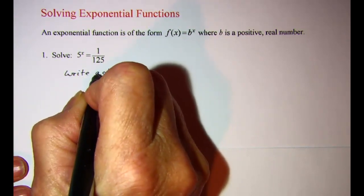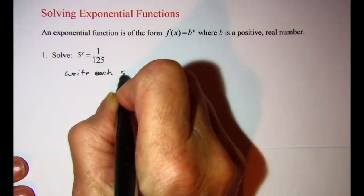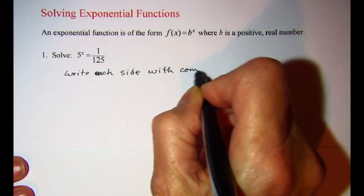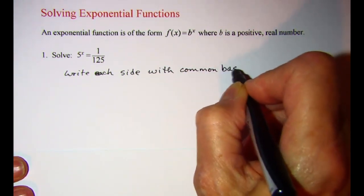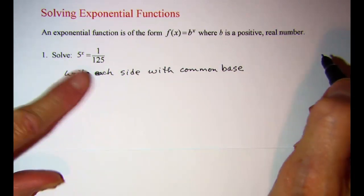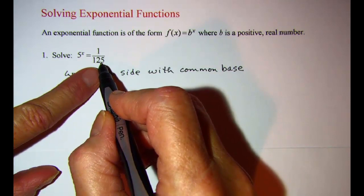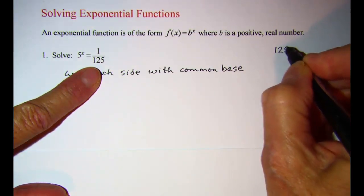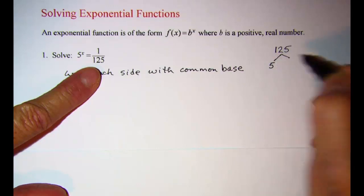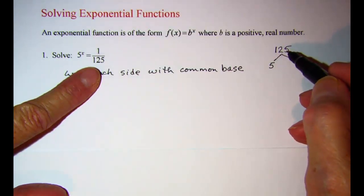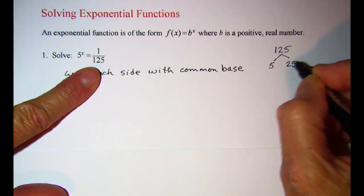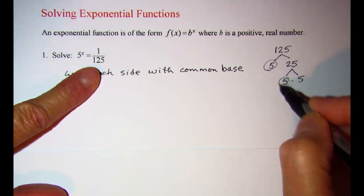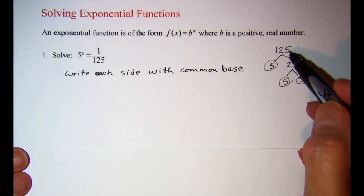So write each side with common base. Basically I want to take the 125 and write it as a power of 5. We can use a factor tree and see how many times 5 divides 125. This is 25, and then 25 is 5 times 5. So since I have 3 factors of 5, that makes 125.